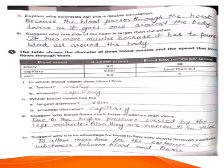Now look at the table. Artery: diameter 4 mm, blood flow 30 centimeters per second. Capillaries: diameter 0.001 mm, blood flow less than 0.1 centimeters per second. Vein: larger diameter. In which blood vessel does blood flow fastest? Artery.